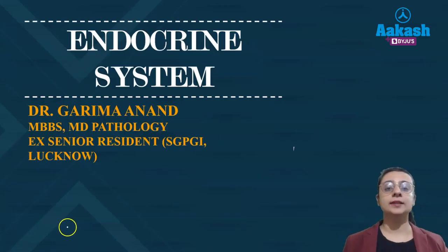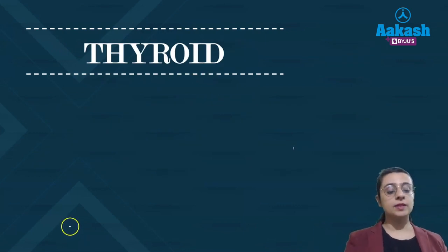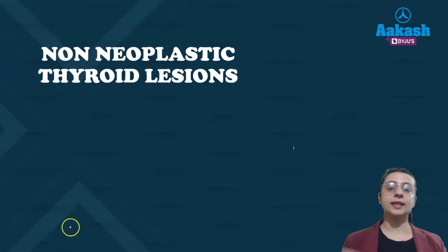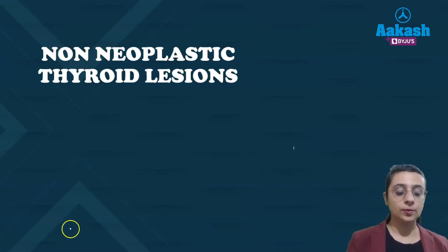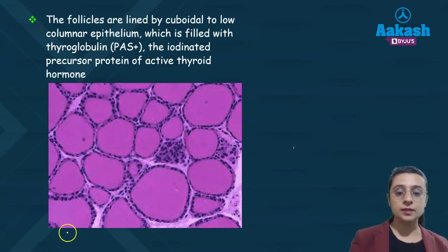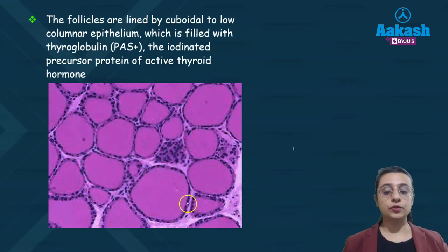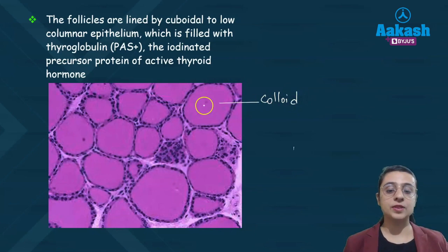Welcome students. Today we will start with the endocrine system, beginning with the thyroid — a very important topic with many exam questions. We will study both non-neoplastic thyroid lesions and thyroid neoplasms. When you observe thyroid tissue under the microscope, you will see abundant thyroid follicles filled with colloid — a pinkish substance present at the center.